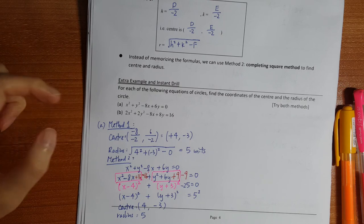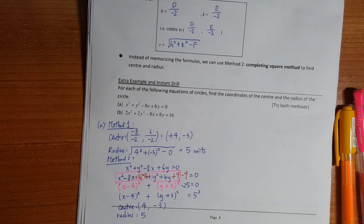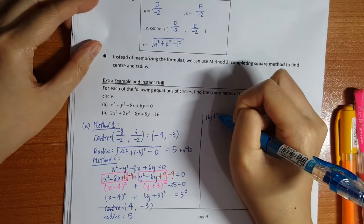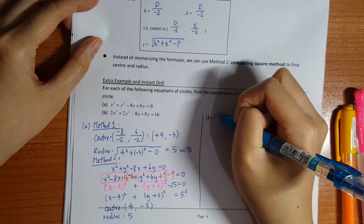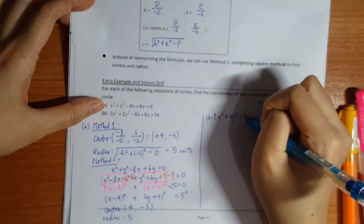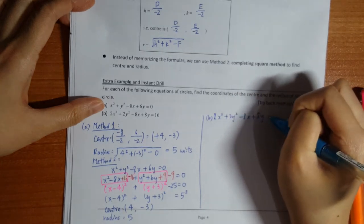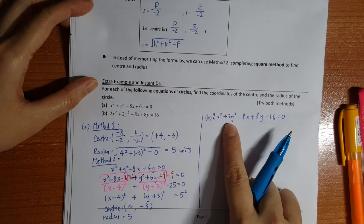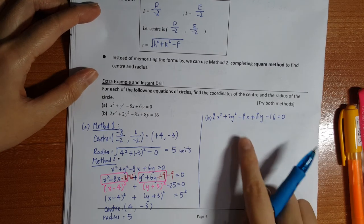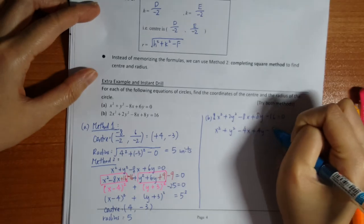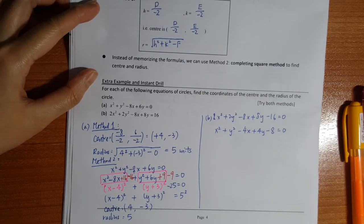After that, so for part B, method 1. So before we start, maybe we rewrite the equation first. So here would be 2x squared plus 2y squared minus 4x plus 4y minus 16 equals to 0. So always remember that, we always need to check, the coefficient of x squared and y squared must be 1. So that means the whole equation you have to divide by 2 first. You have to make it into a general term first, then you start doing it.